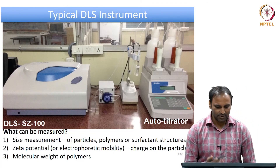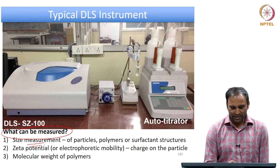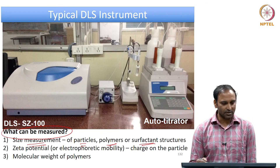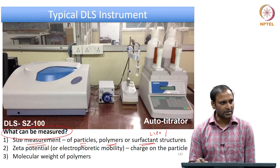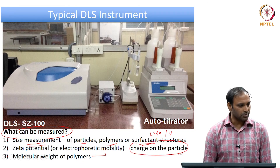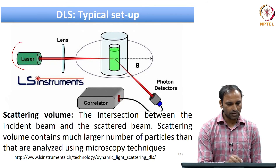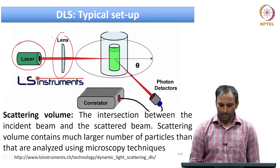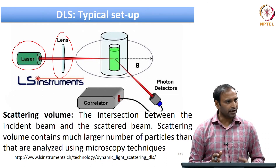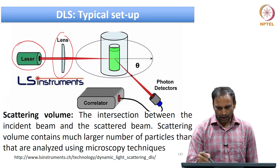The instrument for dynamic light scattering looks something like this - this is one of the tabletop devices available. You can use this for measurement of size of particles, polymers, surfactant structures, liposomes, or vesicles. You can also use such an instrument for measuring charge on the particle or molecular weight of polymers. Within the instrument there is a laser source and a set of lenses, which are useful in sending a collimated light beam that falls on the sample. There is also a detector.